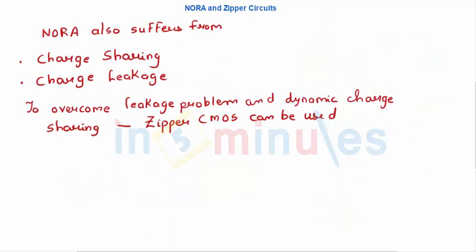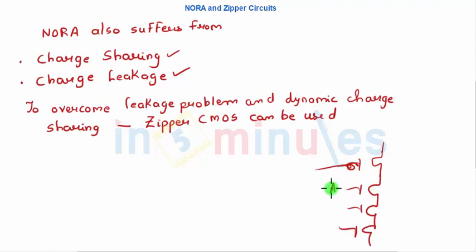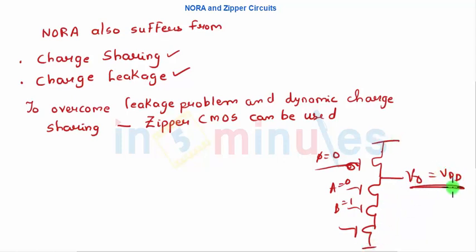NORA circuits, like dynamic circuits, also have their own problems — they suffer from charge sharing and charge leakage. Charge leakage means: suppose my PMOS precharge transistor is off during evaluation; the output node was precharged to VDD, and technically it should hold that charge. But because the transistor is off, due to charge decay the output node may lose its charge. We need some way to hold the VDD value when the precharge transistor is off.